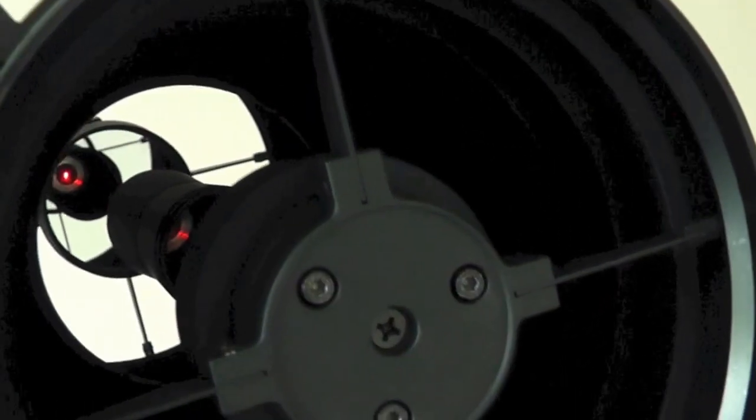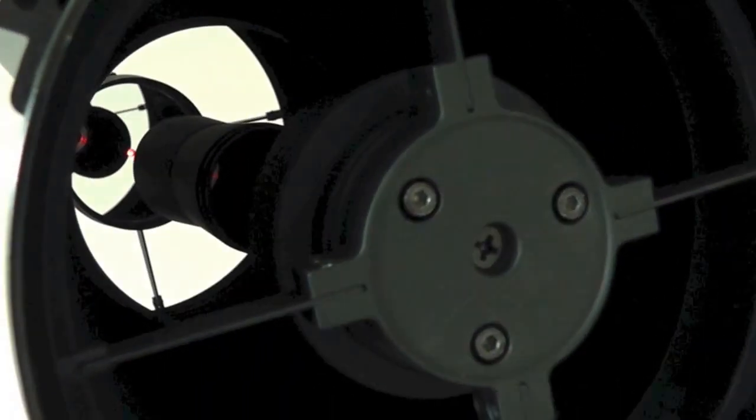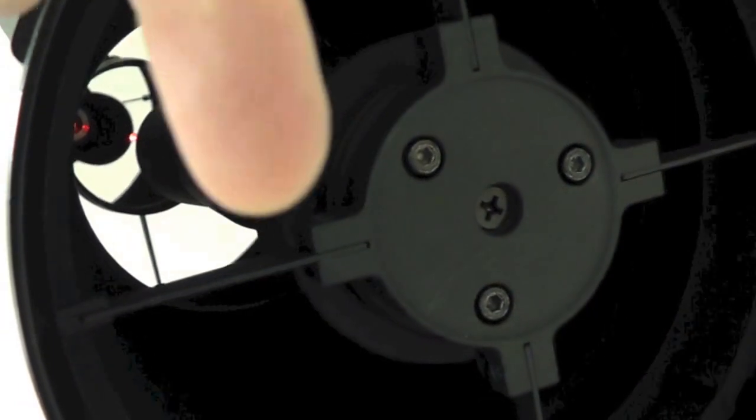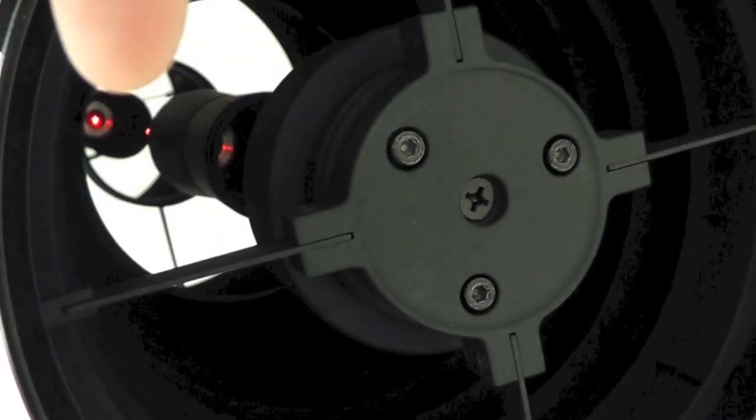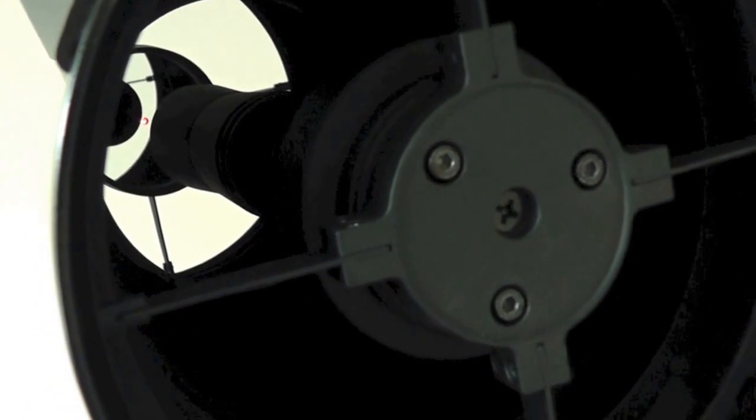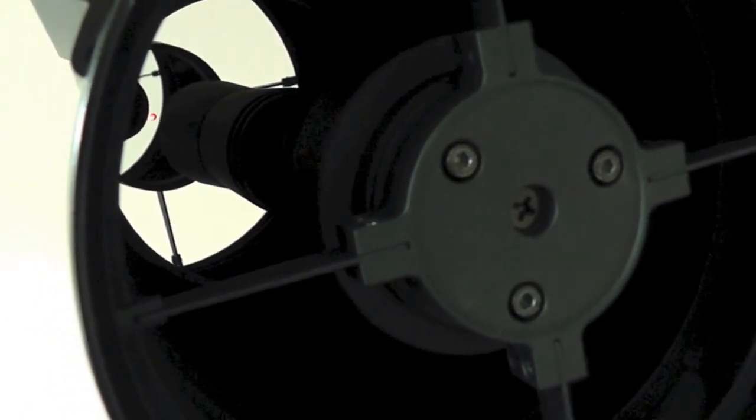When you turn this round, you want to be happy that the spot there, which again you can see there, that spot does not move on that center spot of the secondary. Once you've done that, we've completed phase one.